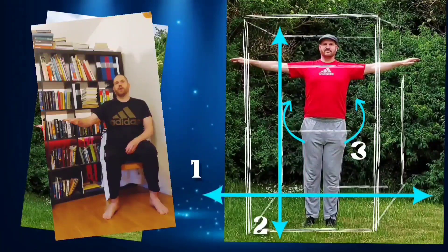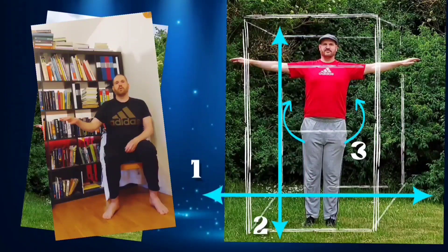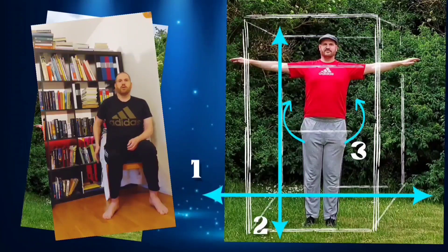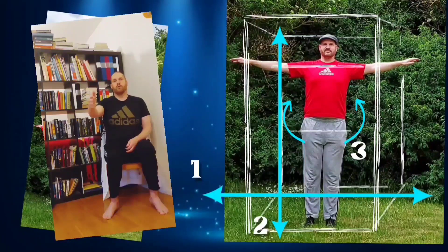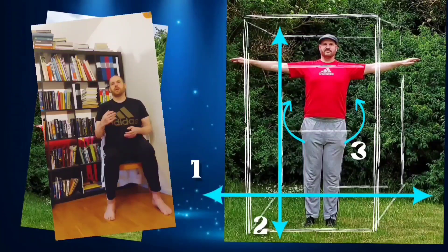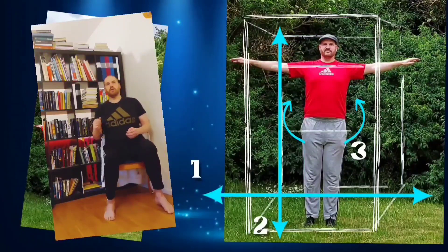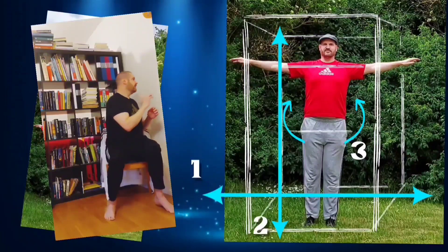The frontal plane is when you move from side to side. Then we have the sagittal plane when you move forth and back. And then we have the transverse plane when you move in a rotational manner.